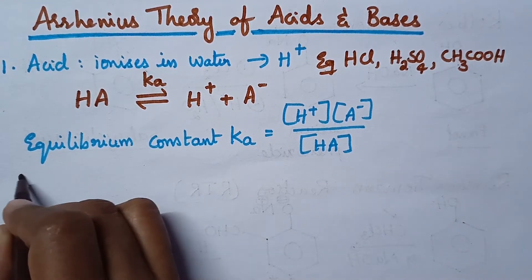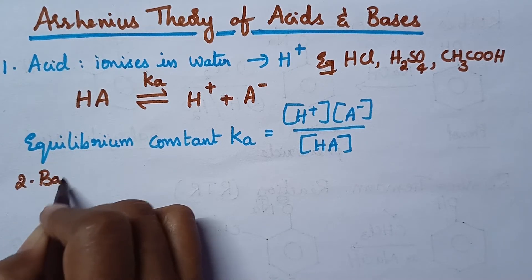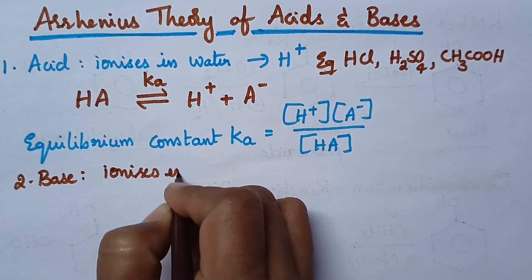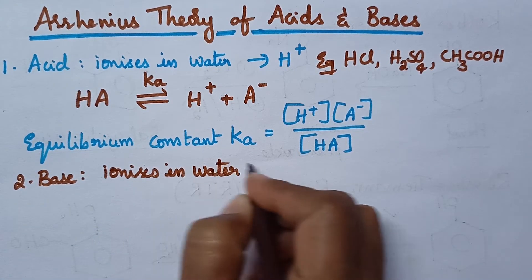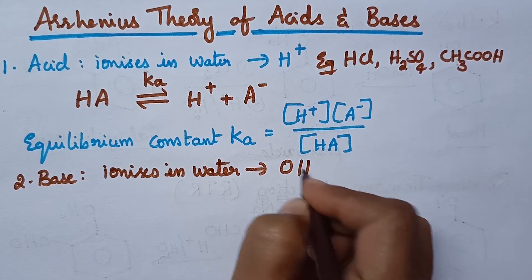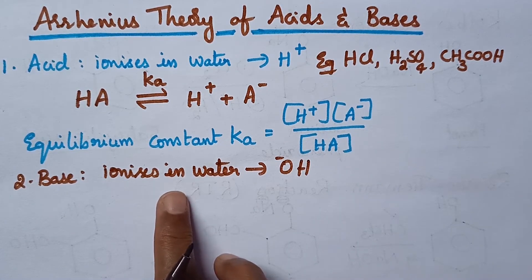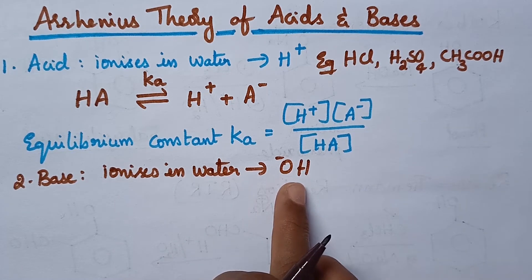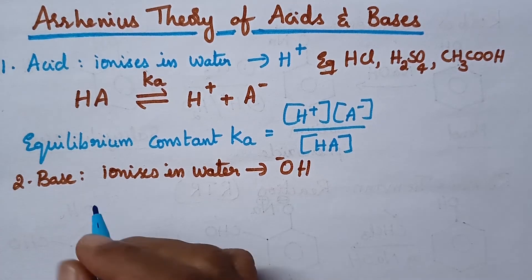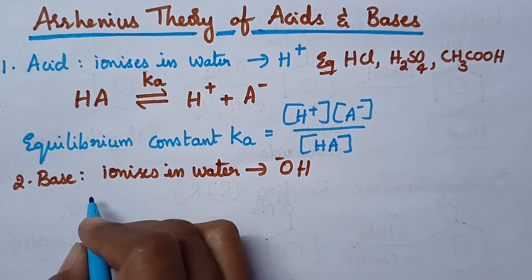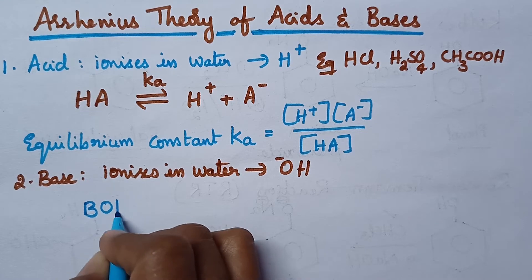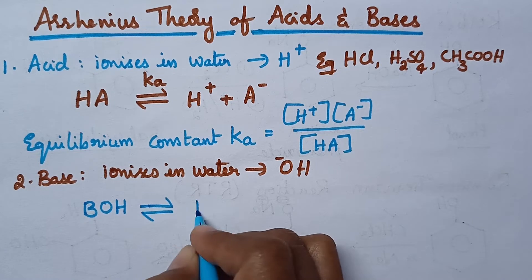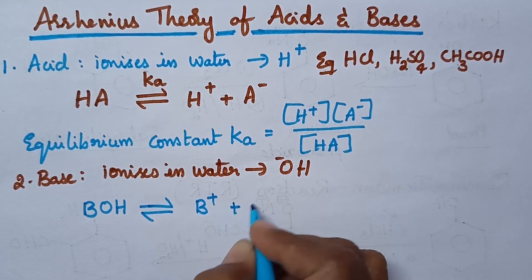Coming to the base, base is a substance that ionizes in water and produces OH- ions. Let us consider the dissociation of a base. Let BOH be a base. Then it dissociates into B+ plus OH-.